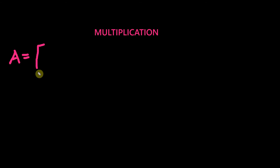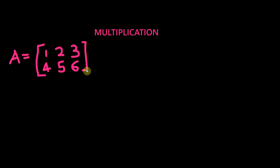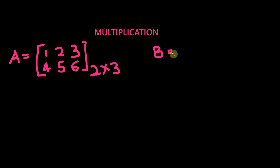First let's take a matrix named A. Let's define the matrix here with rows 1, 2, 3 in row 1 and 4, 5, 6 in the second row. So it's a 2 by 3 matrix because it has two rows and three columns.